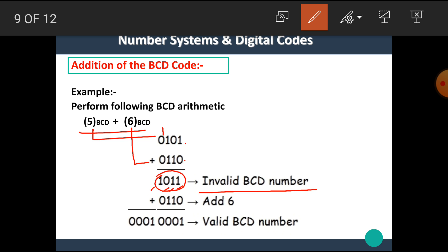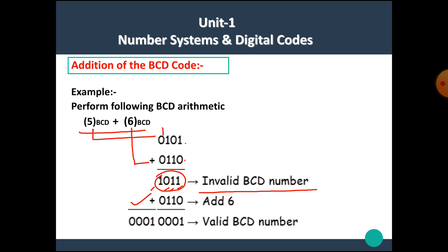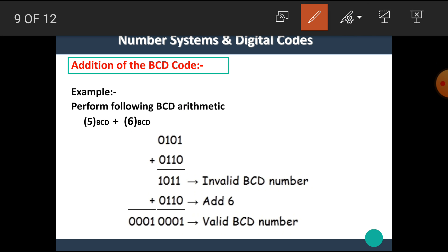Since 1011 is invalid, we have to add 6 (0110) into it. After adding 6 to 1011, we get carries that produce the result 0001 0001. Hence our result of the addition is 11, and we know that 5 plus 6 equals 11. I hope you all understand the addition of the BCD code.